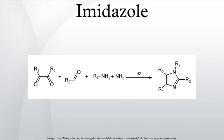The acidic proton is located on N1. As a base, the pKa of the conjugate acid is approximately 7, making imidazole approximately 60 times more basic than pyridine. The basic site is N3. Protonation gives the imidazolium cation, which is symmetrical.